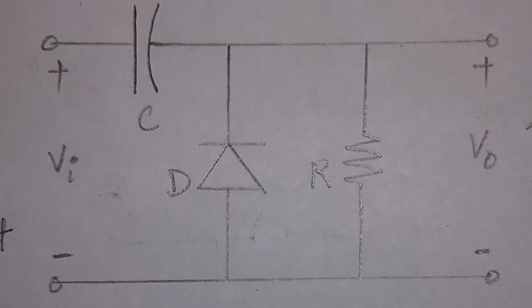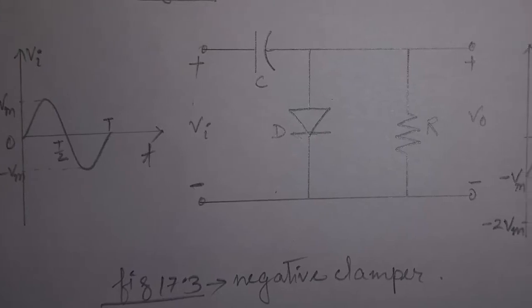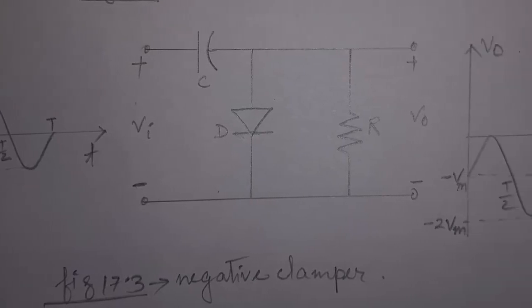The construction of the clamper circuit is same as that of clippers. The only difference is, it contains an extra capacitor. This capacitor provides the DC offset from the stored charge. If the circuit pushes the signal downward, then it is called negative clamper.